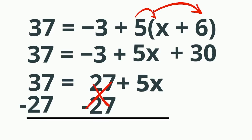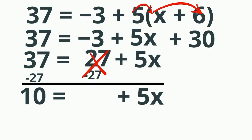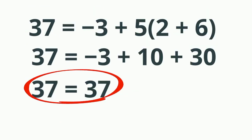Bring down the 5x equals 10 because 37 minus 27 is 10. Now I'll undo the multiplication of 5x by dividing each side by 5, and x equals 2. When I plug it into the original equation, you'll see that it is correct.